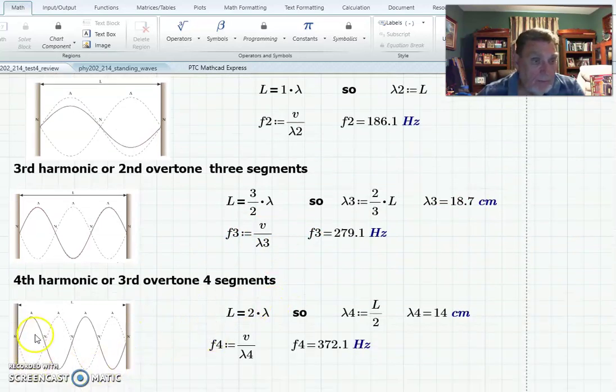And then fourth harmonic is when you have four segments, and so, you know, one, two, three, four, so you get four halves, or two lambda. Solve it, so lambda is half the length of the string. Use that and get your frequency.